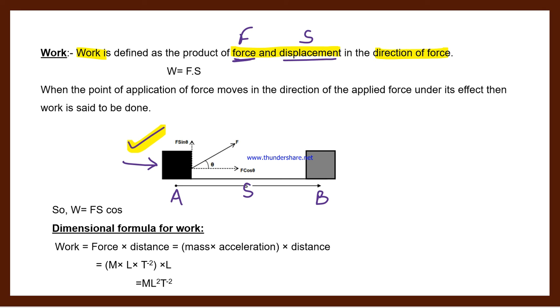So W equals F vector dot S vector. We need to put vector notation here. When we take dot product, this means we are writing in vector form. So F vector dot S vector. This is the work when the point of application of force moves in the direction of applied force under its effect. Then work is said to be done.